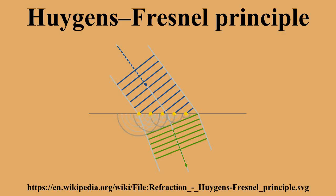A simple example of the operation of the principle can be seen when two rooms are connected by an open doorway and a sound is produced in a remote corner of one of them. A person in the other room will hear the sound as if it originated at the doorway. As far as the second room is concerned, the vibrating air in the doorway is the source of the sound.